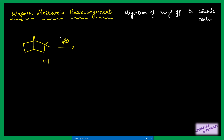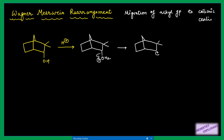In the first example, we have acidic conditions, so H⁺ will combine with the OH to form OH₂⁺, which is a good leaving group. It can easily leave and we will have a secondary carbocation. Now there are two possibilities: we can migrate one proton from this carbon and get a double bond, or we can migrate one of the methyl groups.